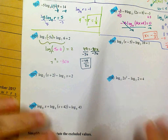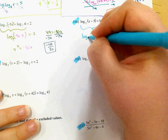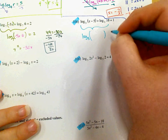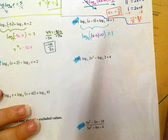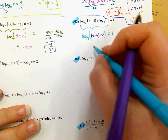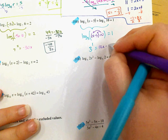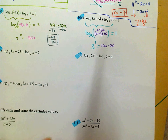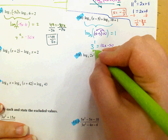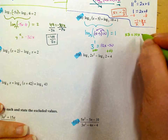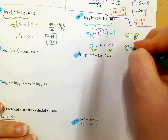On 106, again I've got two logs separated by addition, so I'm going to combine them using multiplication. I've got log base 3 of x minus 5 times 10. I've got a log equal to a number, so I convert to exponential: 3 to the first equals, then I distribute to get 10x minus 50. Adding 50, I've got 53 equals 10x, then dividing by 10, I'm left with x equals 53 over 10, or 5.3.